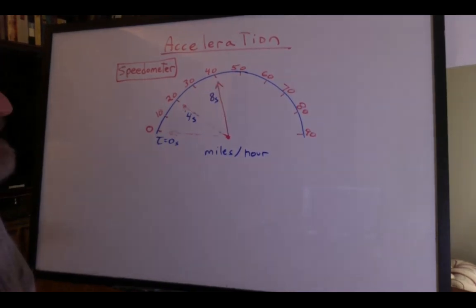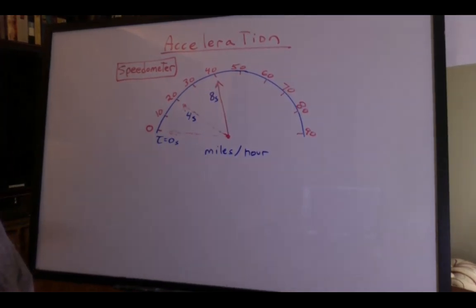At eight seconds, you're doing 40 miles an hour. And at 12 seconds, you reach 60 miles an hour. What's your acceleration?